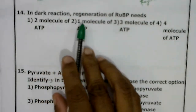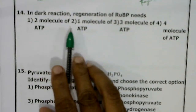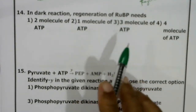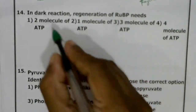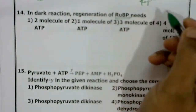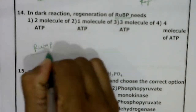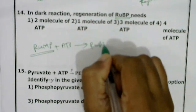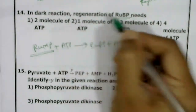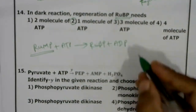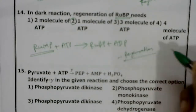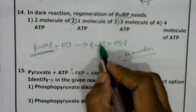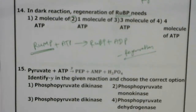In the dark reaction, regeneration of RUBP needs how many ATP molecules? During the Calvin cycle, RUBP is regenerated from RuMP. One molecule of RuMP reacts with 1 ATP to form RUBP + ADP. So regeneration requires one molecule of ATP, occurring during the regeneration step. From fructose there is regeneration of RuMP, which is converted into RUBP. Correct answer: second option, one molecule of ATP.